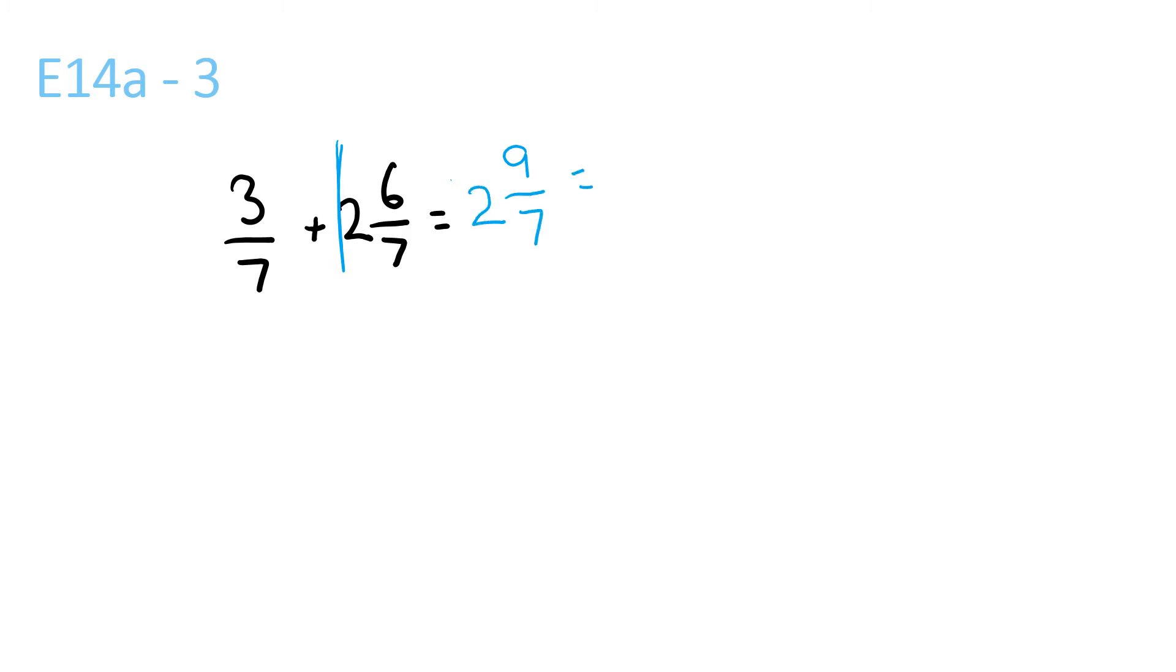Which is equal to, forget the 2 for now, 9/7 is 1 and 2/7, right? So just put 2/7 for now, and then do 2 plus 1 is equal to 3, so 3 and 2/7.